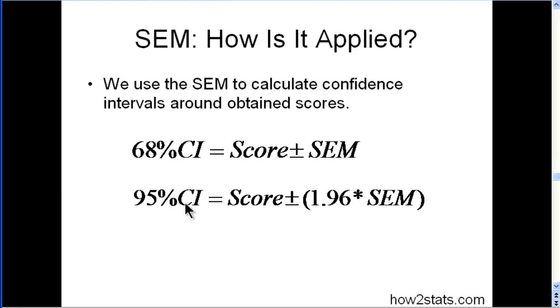95% confidence intervals, which is probably most frequently applied in practice. So it's the score plus or minus the product of 1.96 and the standard error of measurement. Now this 1.96 corresponds to the Z distribution point at which 95% of scores fall under that.